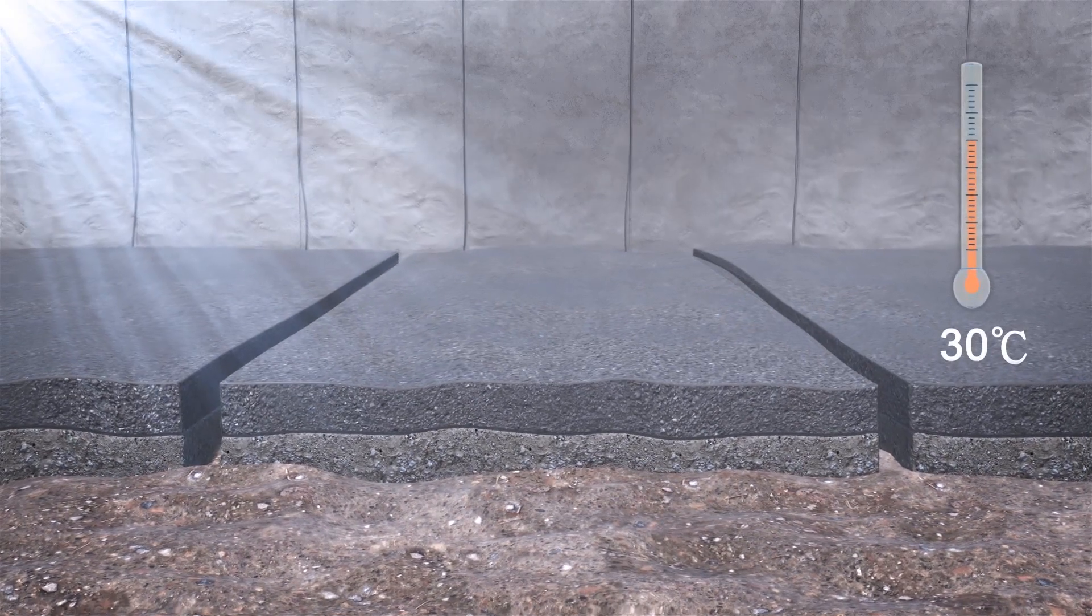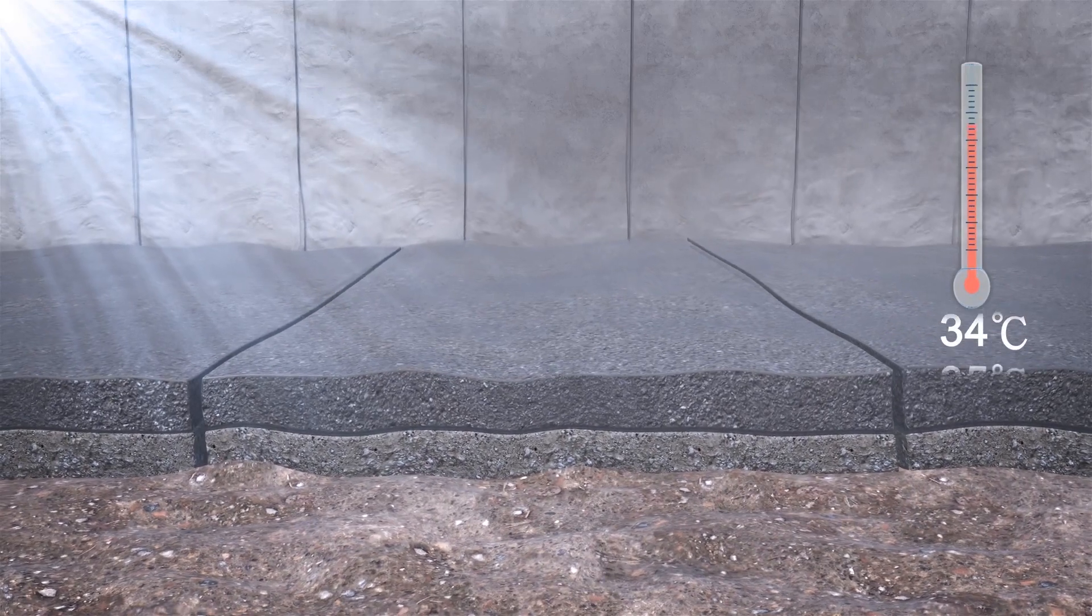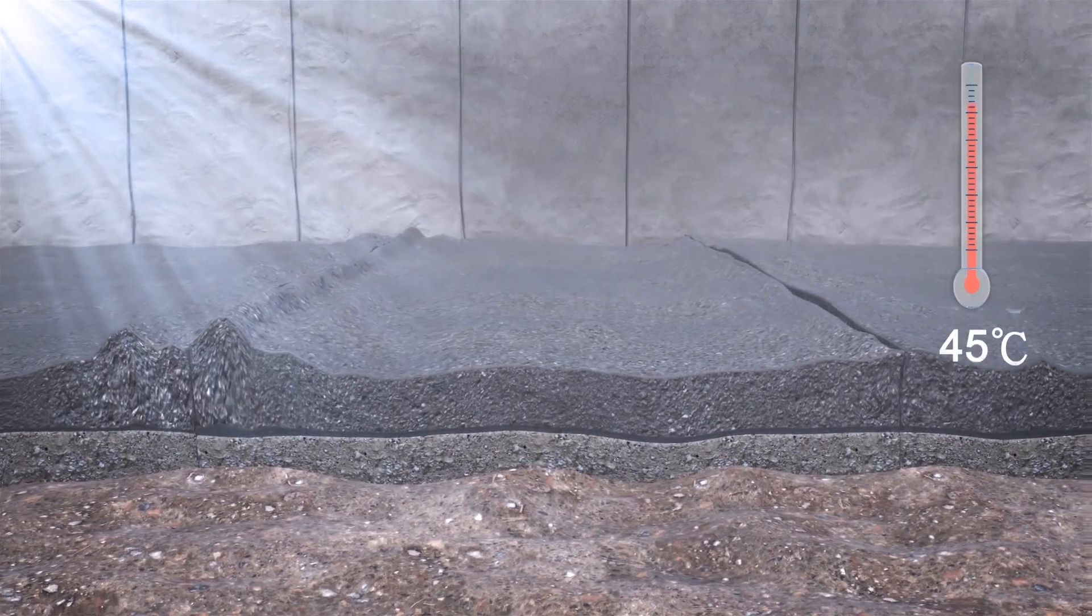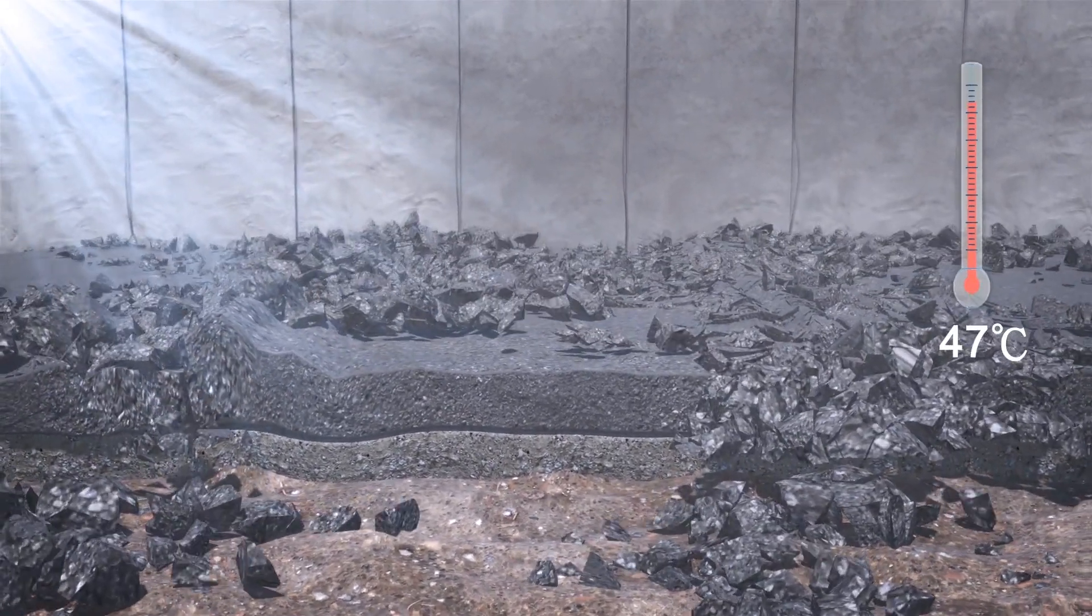However, these gaps are only big enough to make room for the kind of expansion that happens during normal temperature highs. The recent heat wave created temperatures so high that the concrete slabs expanded so much that they pushed against each other, causing the slabs to break and buckle.